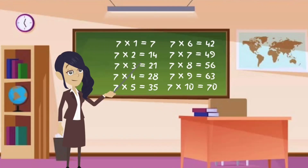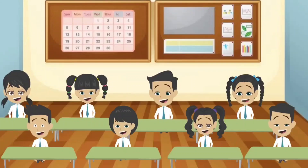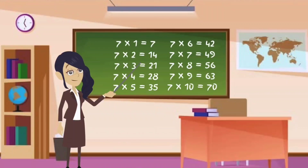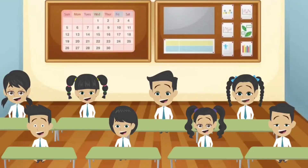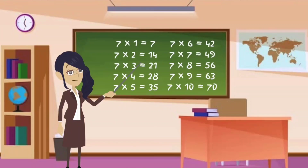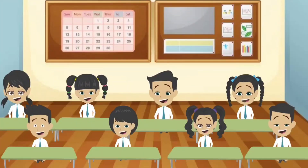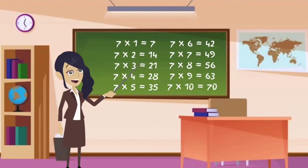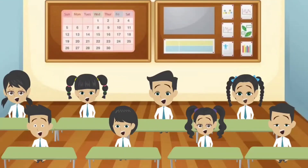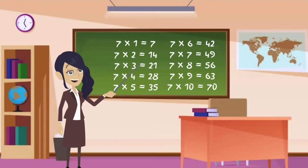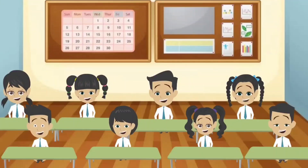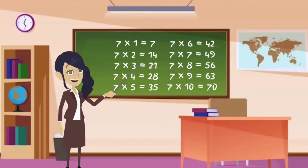Let's do this again together. 7 ones are 7. 7 twos are 14. 7 threes are 21. 7 fours are 28. 7 fives are 35. 7 sixes are 42. 7 sevens are 49. 7 eights are 56.